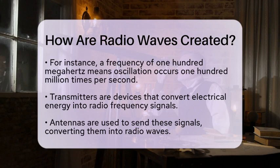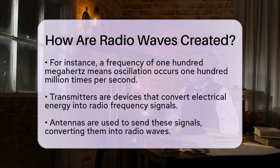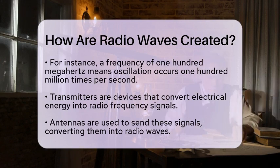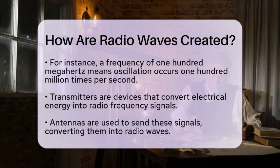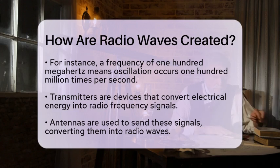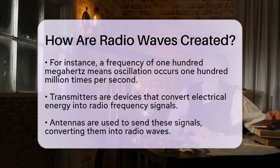To create radio waves, transmitters are used. These devices convert electrical energy into radio frequency signals. The transmitter sends these signals through an antenna, which converts the electrical signals into radio waves that can travel through the atmosphere.